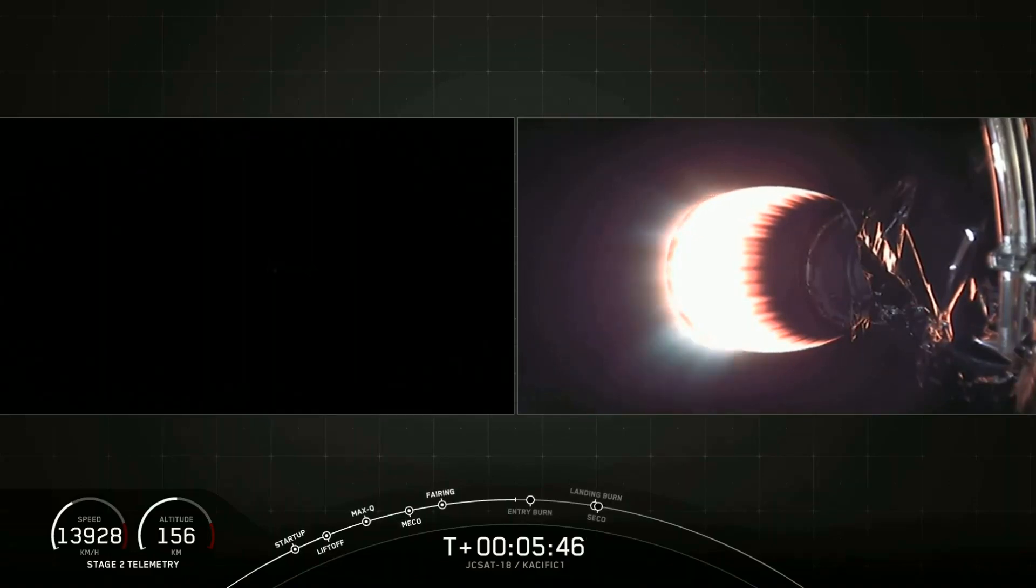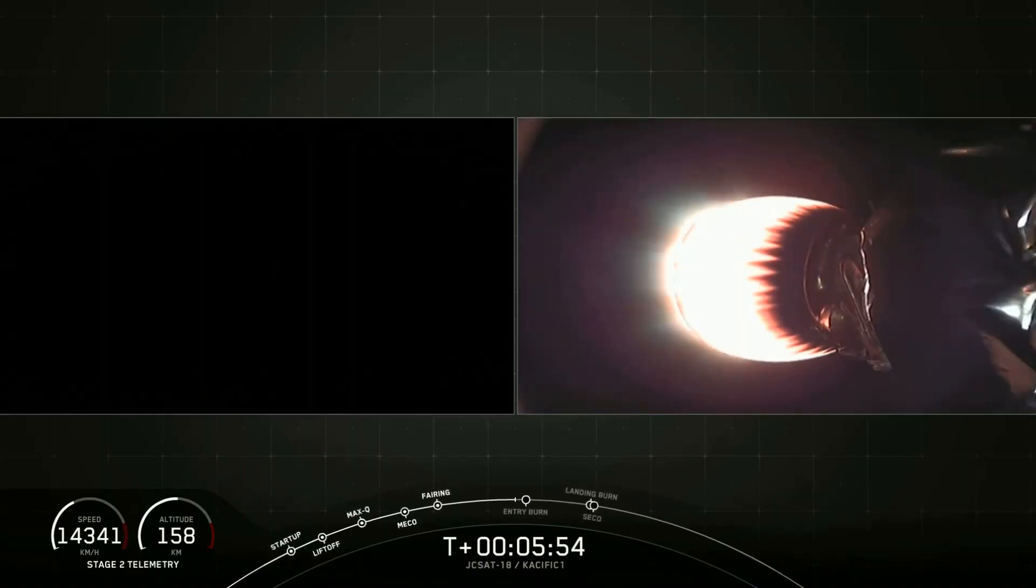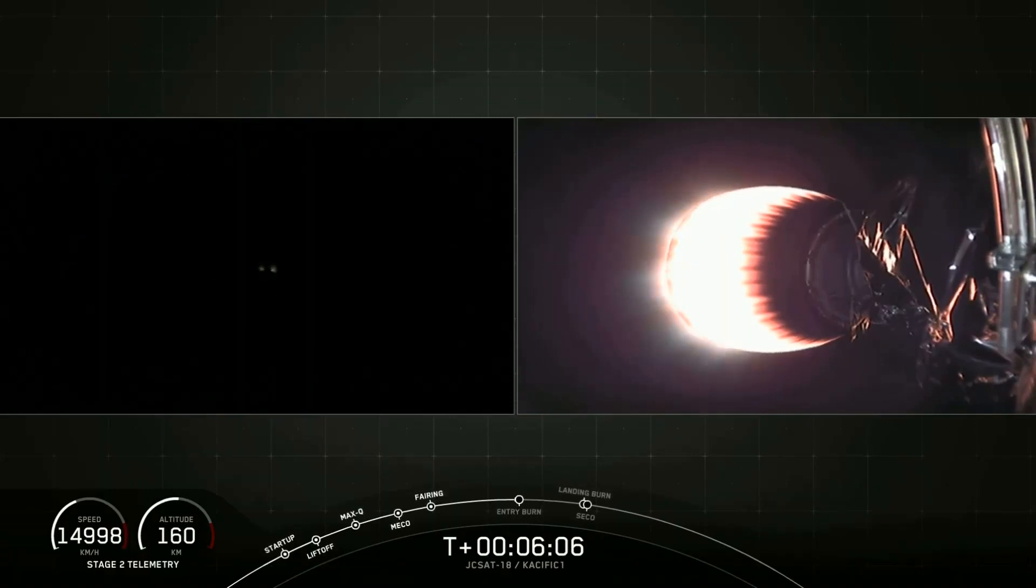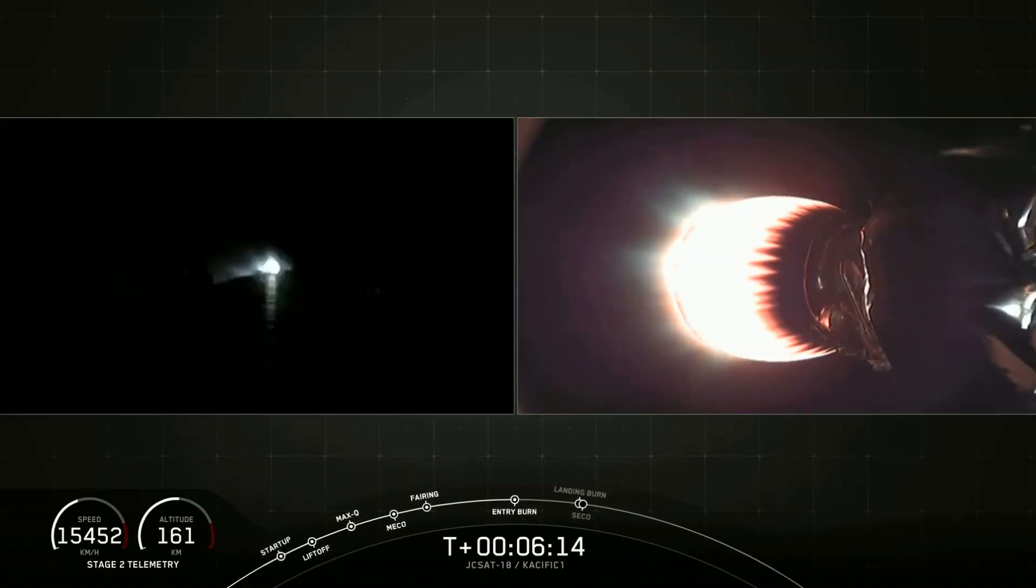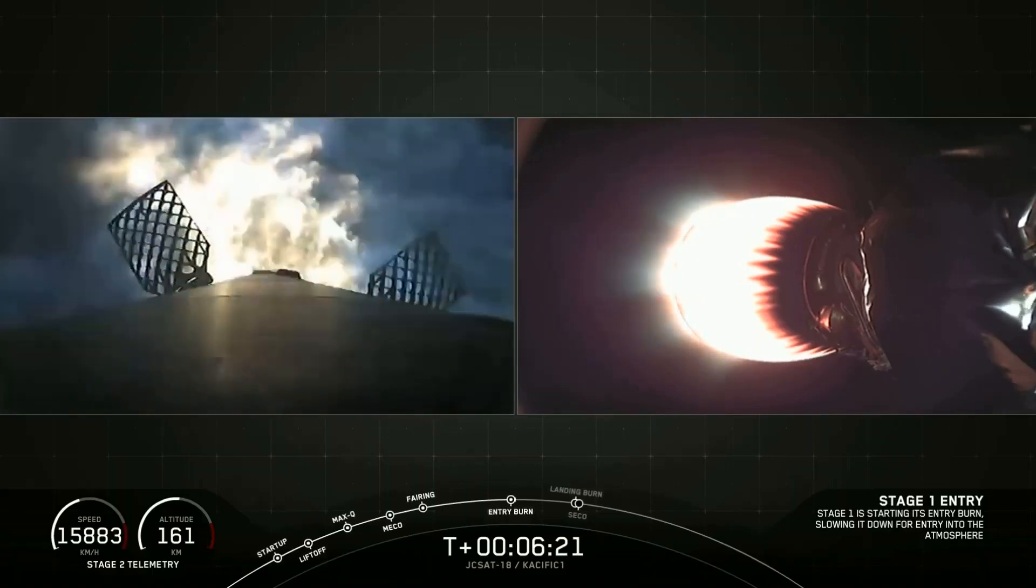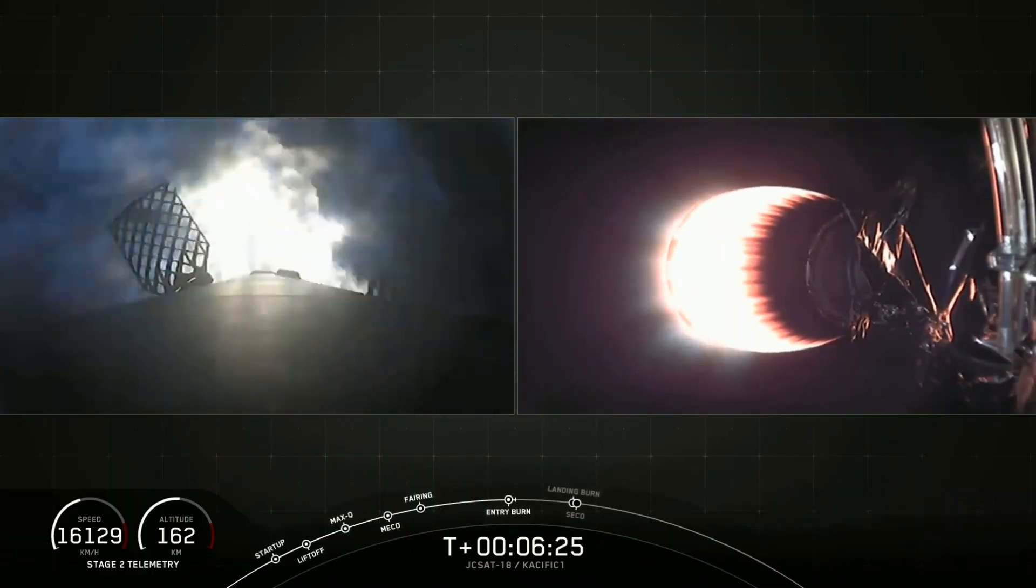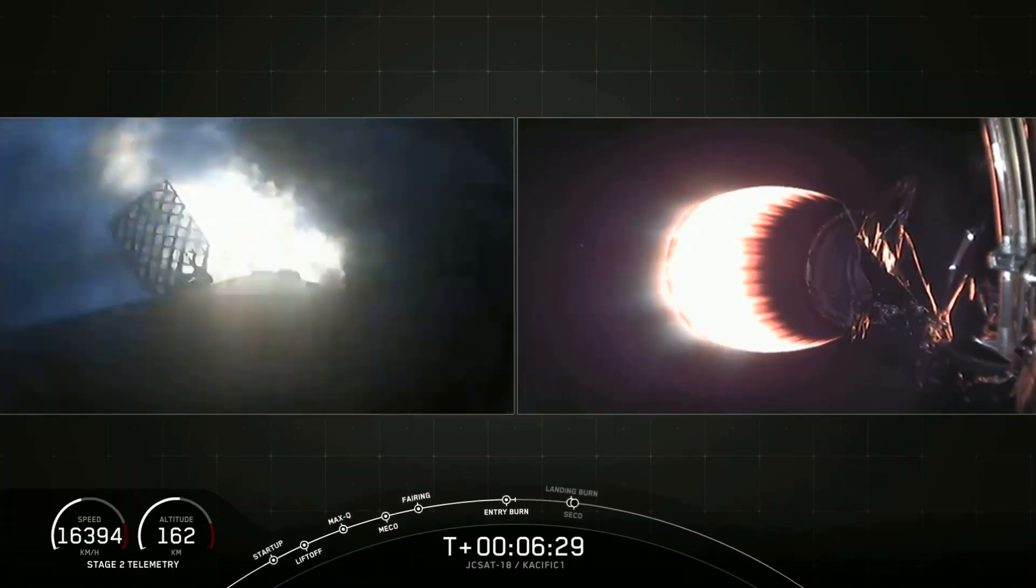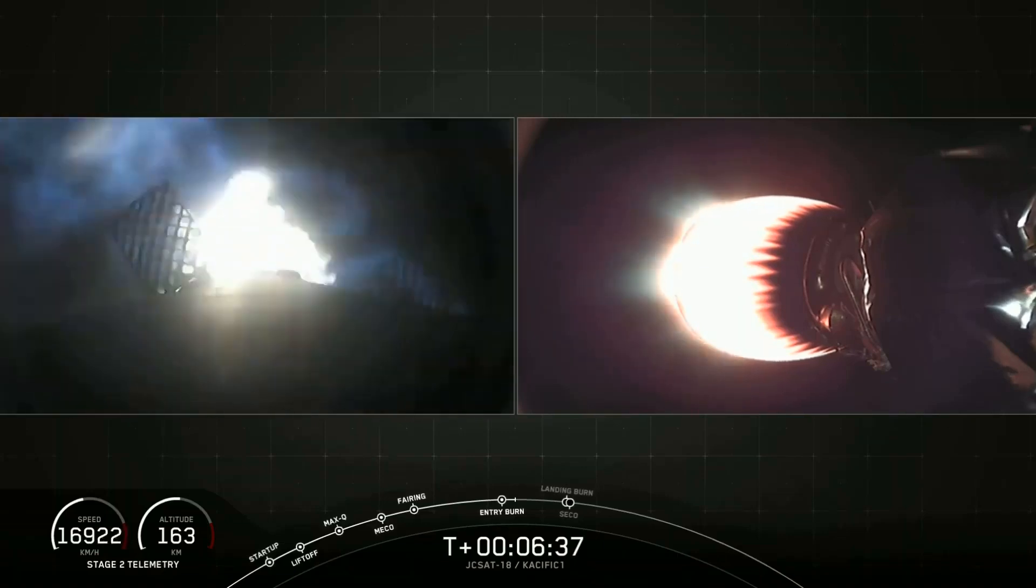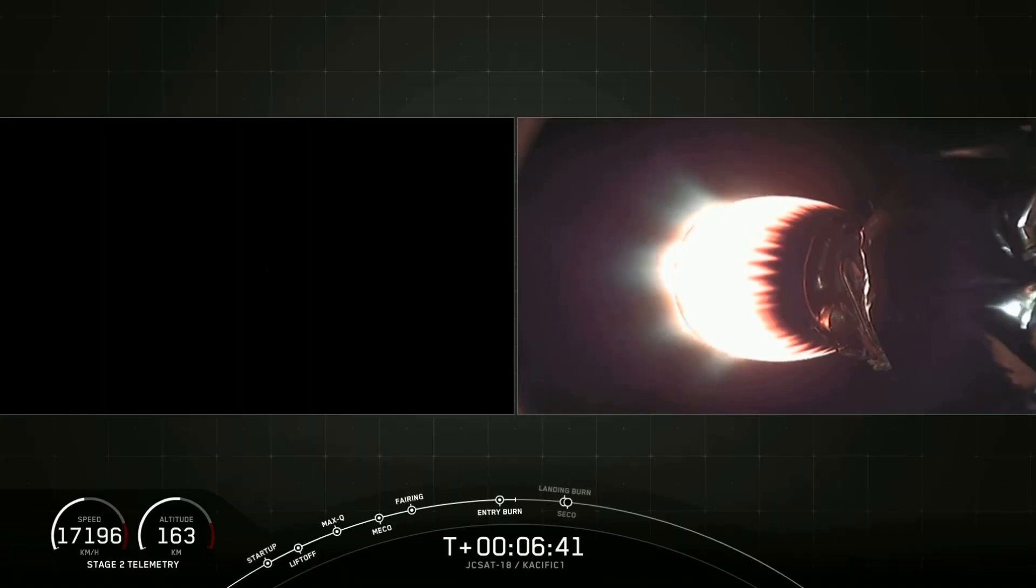On your right side is the second stage and back engine continuing its burn. Stage one FTS has safed. Stage one entry burn startup, and there's relight of those three Merlin vacuum engines. Fun fact: JCSAT-14 was actually the first time SpaceX successfully landed a geosynchronous transfer mission on a drone ship. Since then we've made 43 successful landings between drone ships and on land. Stage one entry burn shutdown.